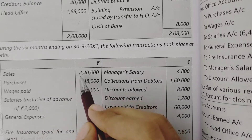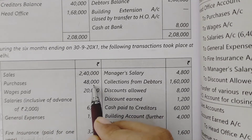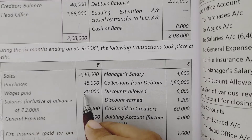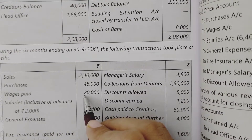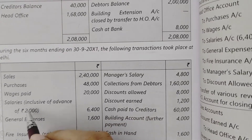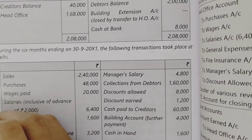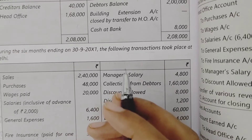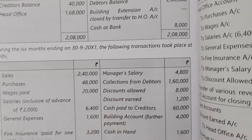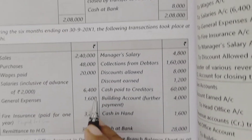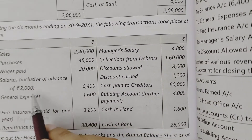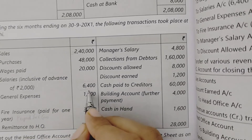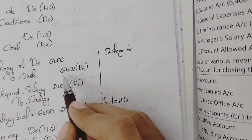Journal entries: Sales — debit debtors account, credit sales $2,40,000. Purchases — debit purchases account, credit creditors $48,000. Wages paid $20,000 — debit wages account, credit cash. Basic rules of accounting apply: assets debit, expenses debit, liabilities credit, income credit, capital credit. Salaries inclusive of advance $2,000 — total salary paid is $6,400, so debit salary account, credit cash $6,400.